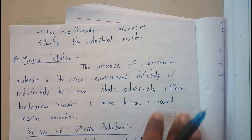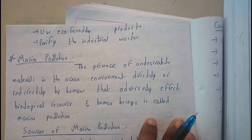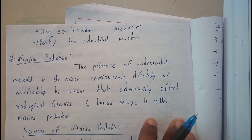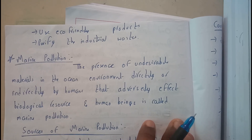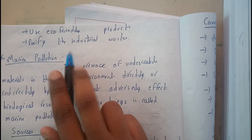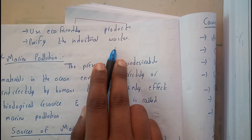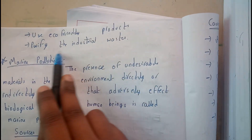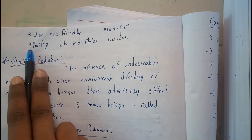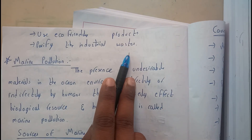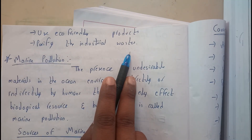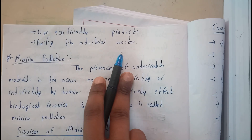Use eco-friendly products to decrease the usage of plastic and many unwanted materials that cause pollution. Purify industrial wastes — if industrial wastes are purified, it will reduce a lot of pollution, including air and water pollution and many other types of pollution.